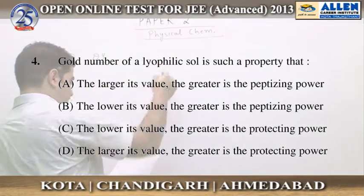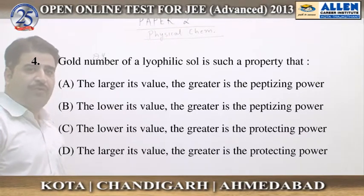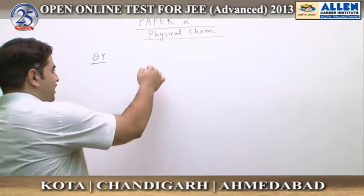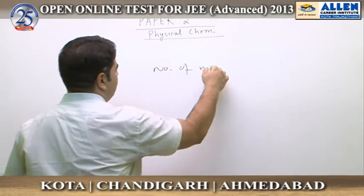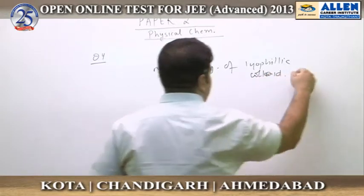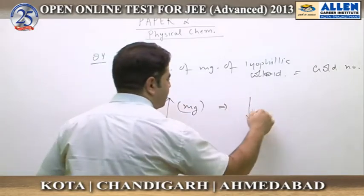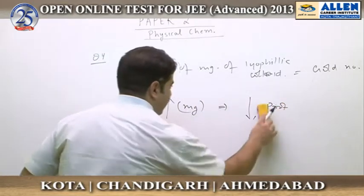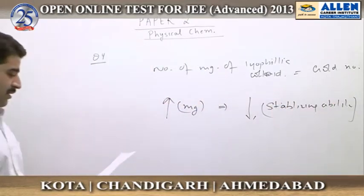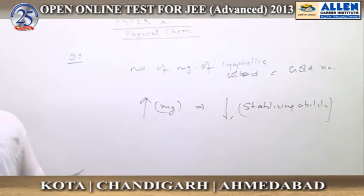In question number four, the gold number is the minimum number of milligrams of lyophilic sol that has to be added to a lyophilic colloid so that it gets stabilized. The number of milligrams of the lyophilic colloid equals the gold number. The greater the number of milligrams required, the lesser is the stabilization ability of that colloid — lower is the stabilizing ability of that particular colloid.